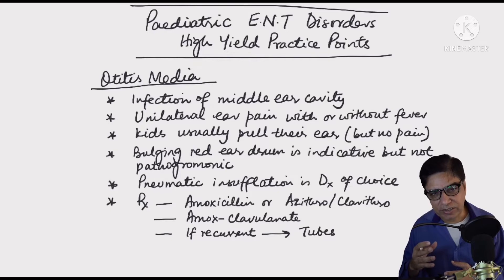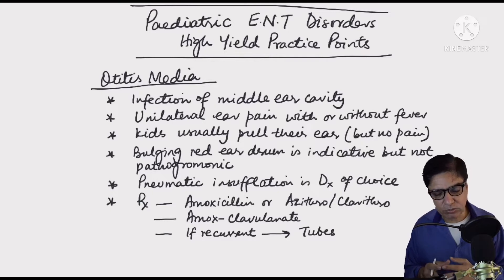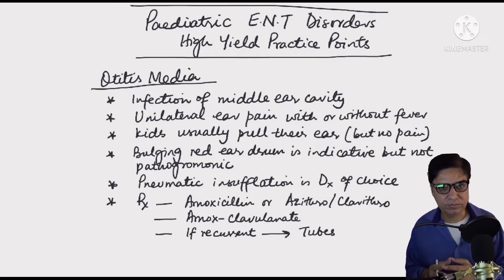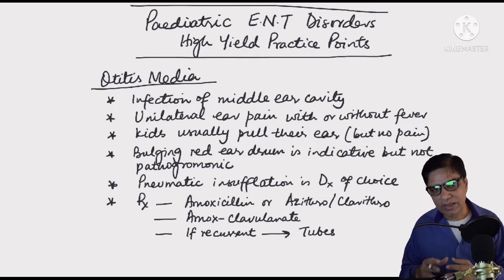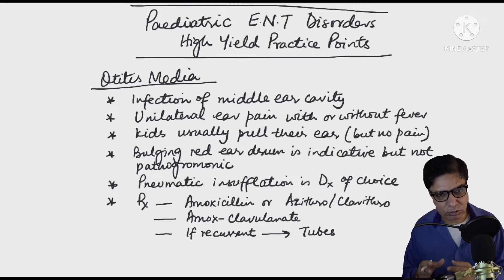If the infection doesn't clear with amoxicillin, we give co-amoxiclav. For kids allergic to penicillin, you can give either clarithromycin or azithromycin. So amoxicillin, or clarithromycin, or azithromycin is the first-line drug for acute otitis media and should clear up the infection in most cases.